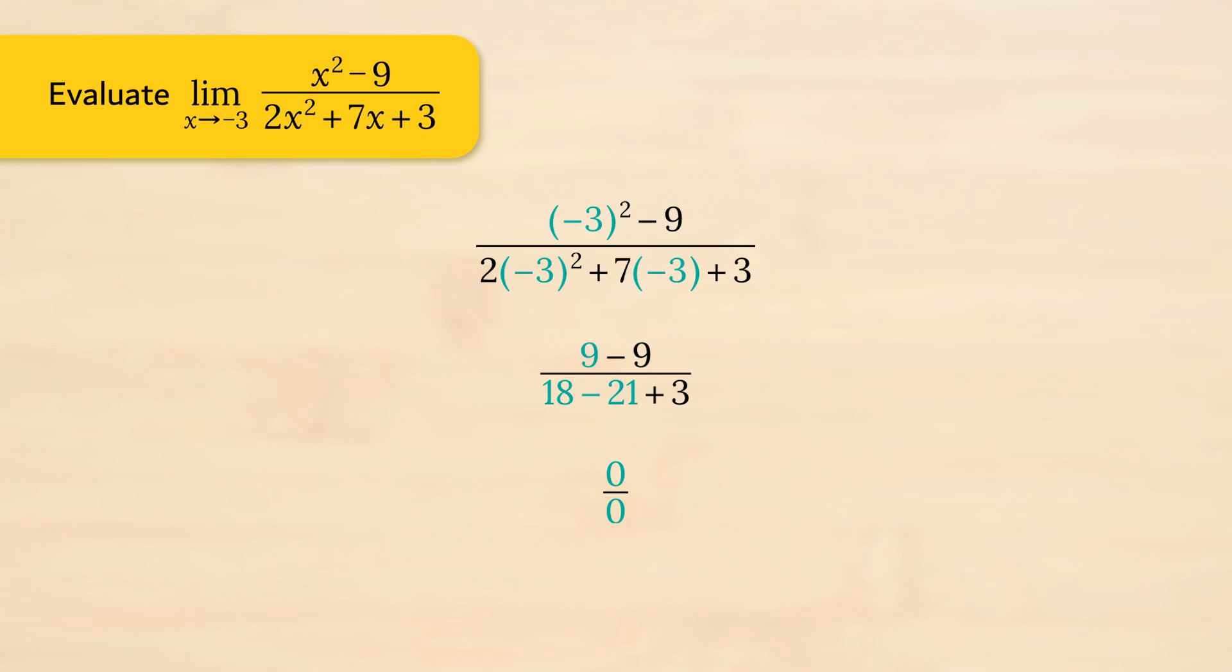We have the indeterminate form 0 over 0. This rational expression looks factorable, and by rational I mean it's a division, there's something divided by something else.